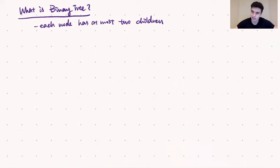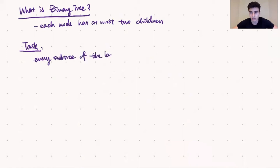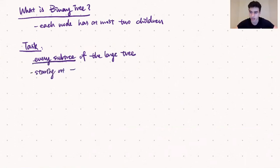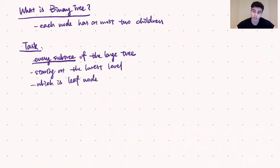Our task is to evaluate every single subtree of a larger tree. The best way to evaluate subtrees is by starting at the lowest level — the smallest unit of the subtree in a larger tree. The smallest unit of a subtree is the leaf node. Since all leaf nodes that contain zeros inherently violate the property we're trying to preserve, we realize we can start by evaluating only leaf nodes.